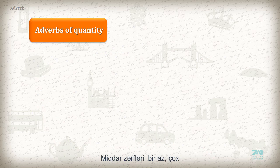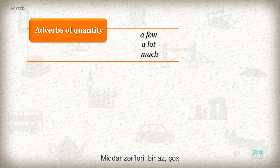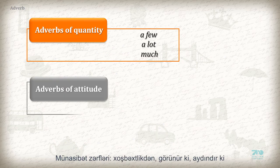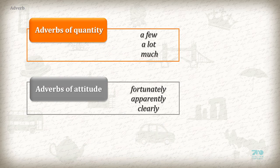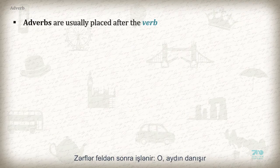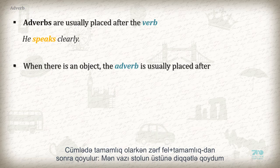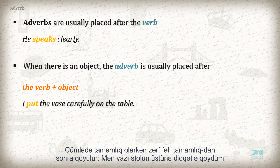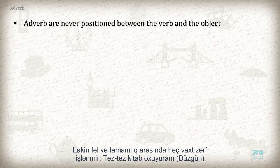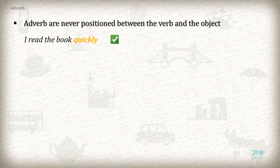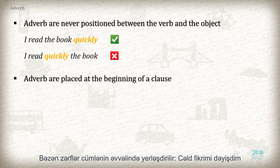Adverbs of quantity include: a few, a lot, much. Adverbs of attitude include: fortunately, apparently, clearly. Adverbs are usually placed after the verb — for example: 'He speaks clearly.' When there is an object, the adverb is usually placed after the verb plus object — for example: 'I put the vase carefully on the table.' However, adverbs are never positioned between the verb and the object. 'I read the book quickly' is correct; 'I read quickly the book' is incorrect. Sometimes adverbs are placed at the beginning of a clause — for example: 'Quickly, I changed my opinion.'